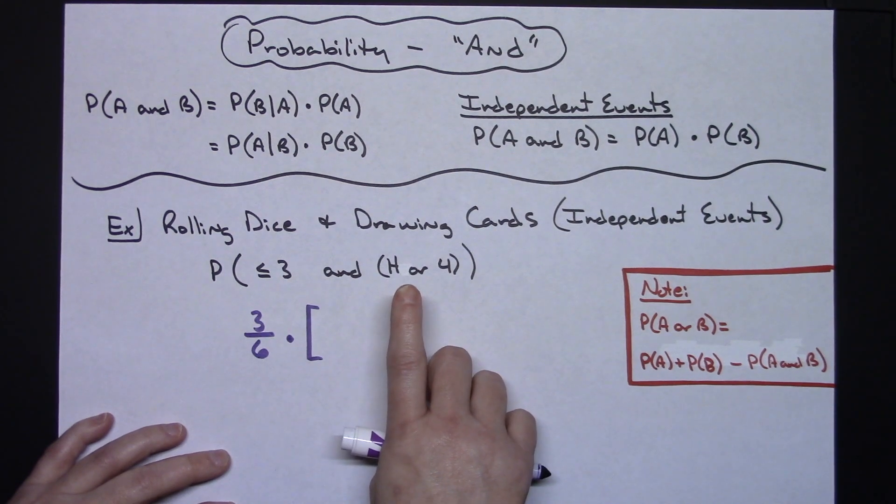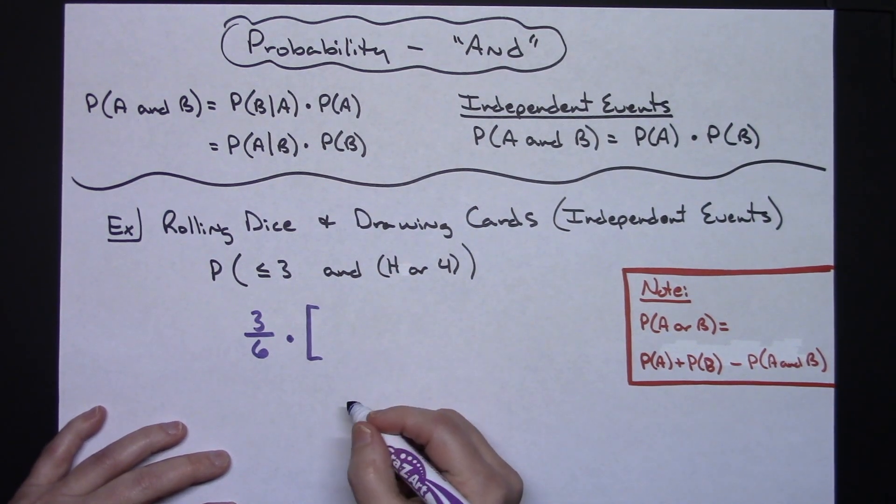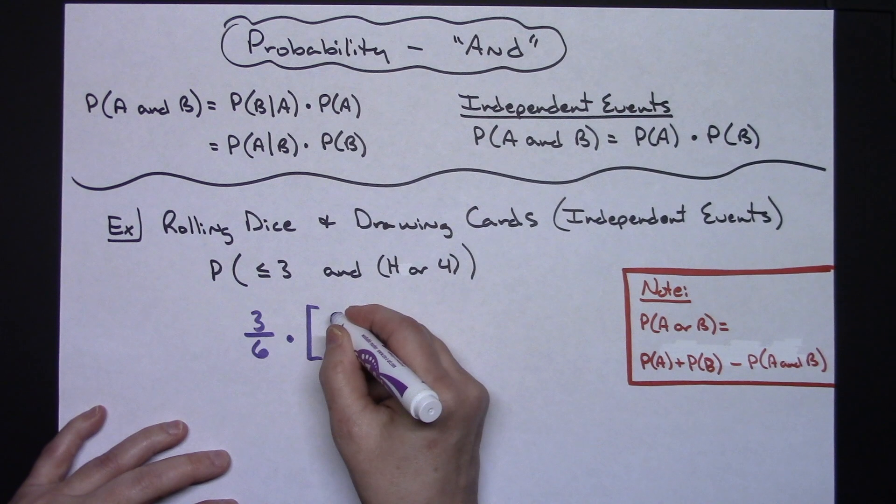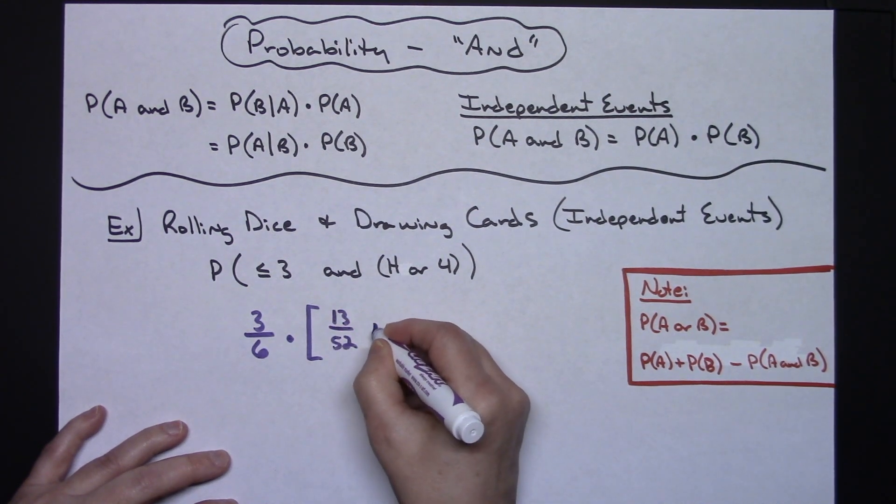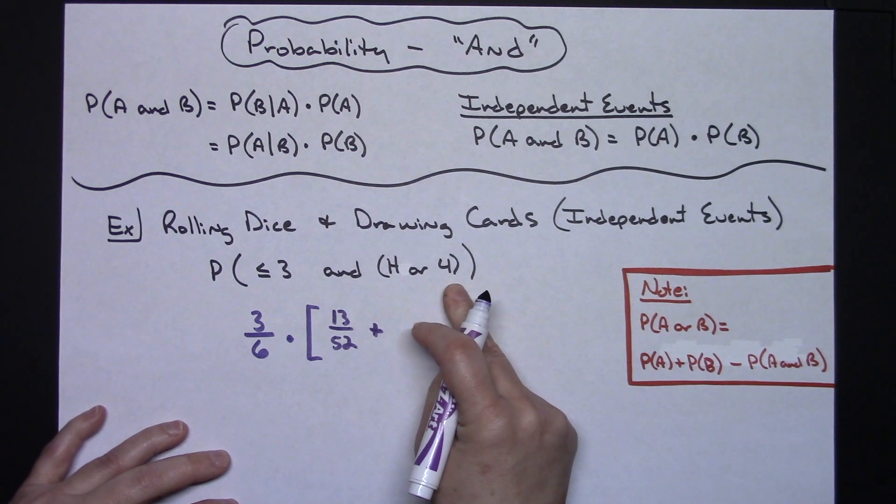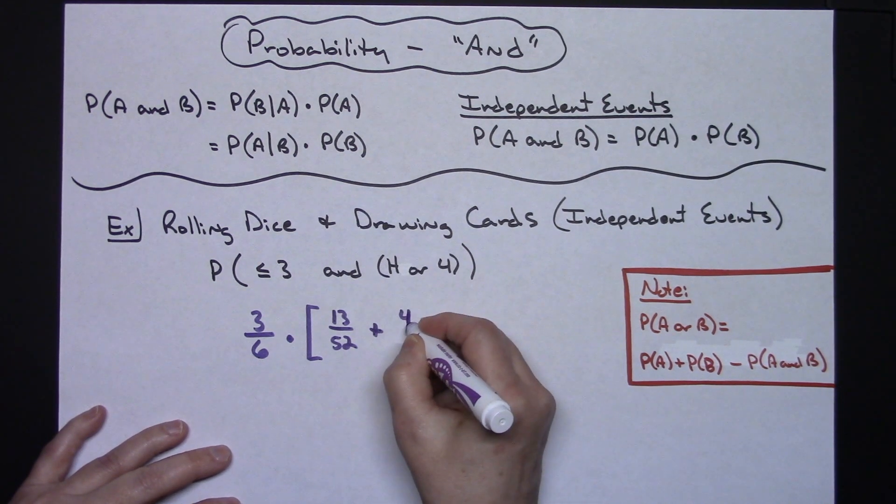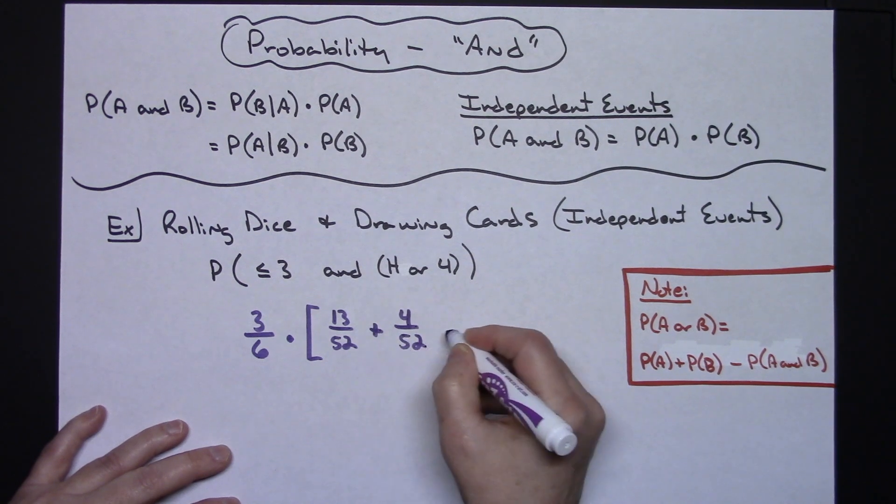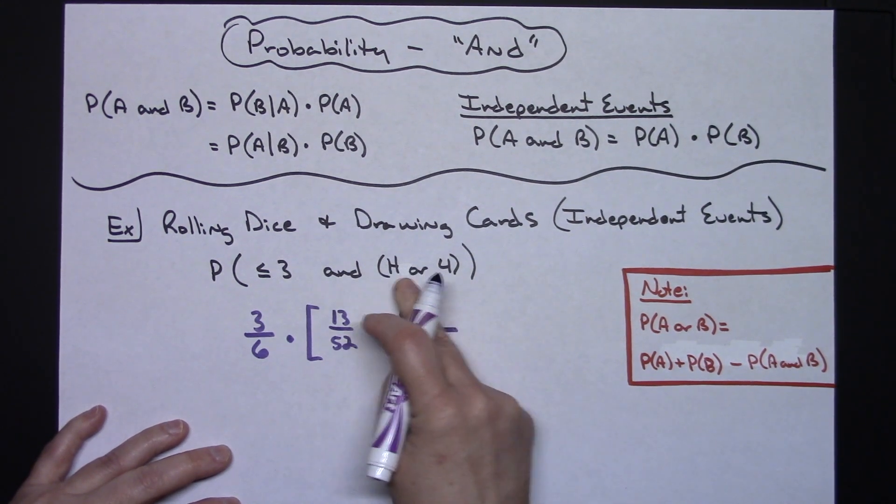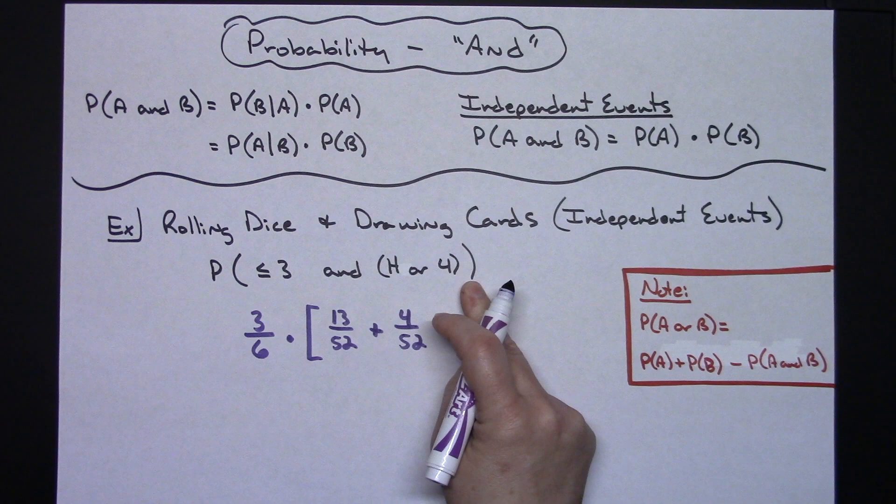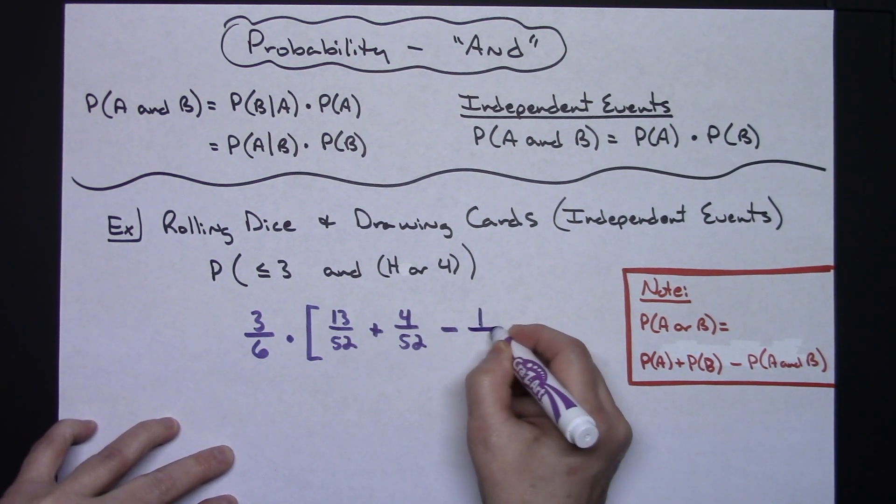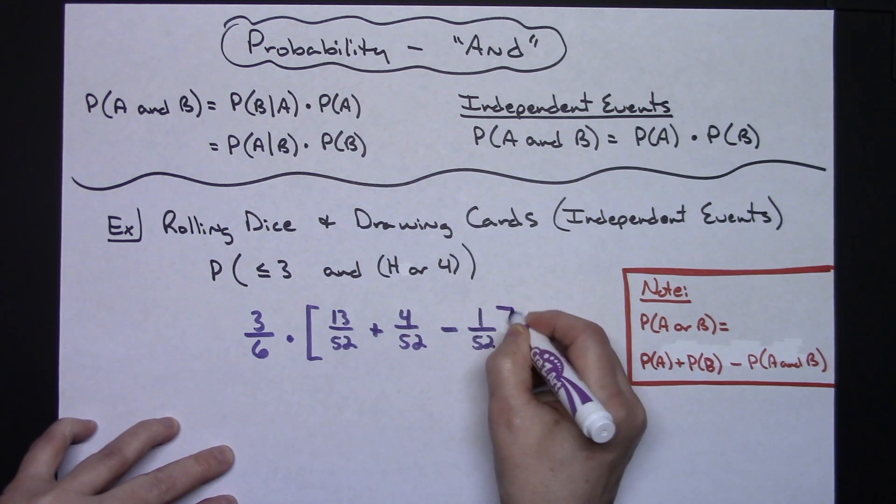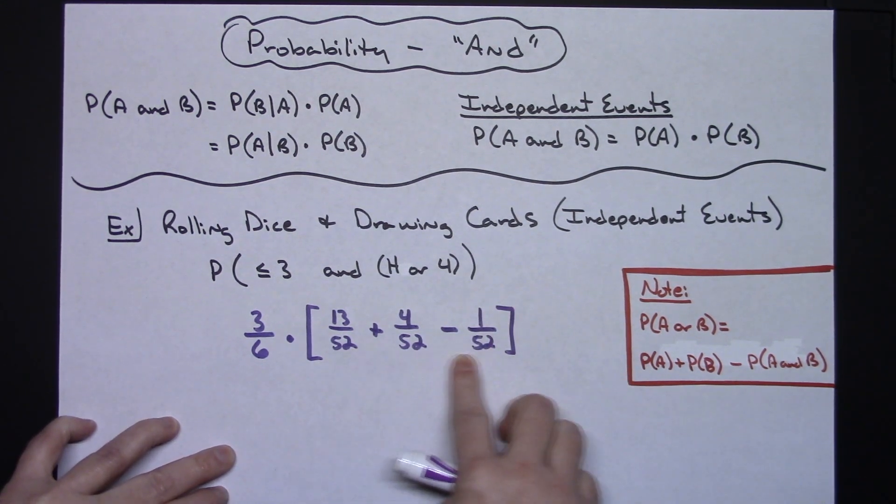The probability of getting a heart - well, there are 13 hearts in a deck of cards, so that would be 13 out of 52. Plus there are four fours in a deck, so that would be four out of 52. And then minus, what's the probability of getting a four of hearts? Well there is one four of hearts, so that would be one over 52.